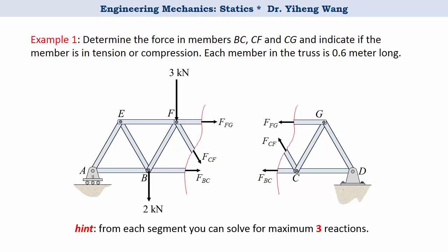Therefore, either side we choose, we need to determine the support reaction first. Now the left segment has only one support reaction associated with the roller, while the right segment has two support reactions associated with the pin. So for convenience, we should pick the left segment for further analysis.